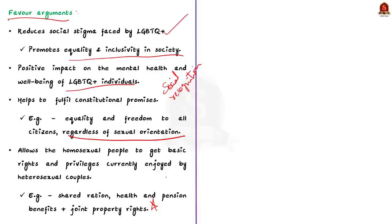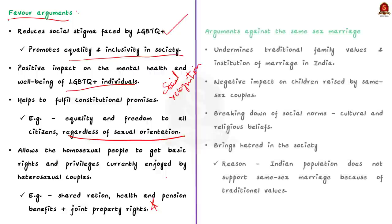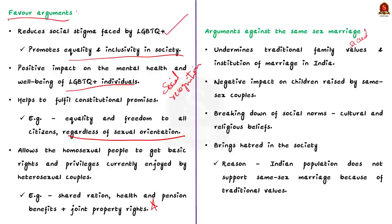Now, the arguments against same-sex marriage. Firstly, such marriages undermine traditional family values and the institution of marriage. In India, marriage is considered a sacred institution defined as a union between a man and a woman. Changing this definition to include same-sex couples would undermine the traditional values of the country. Apart from this, the primary purpose of marriage — to raise children — cannot be fulfilled by same-sex couples, creating further difficulties.